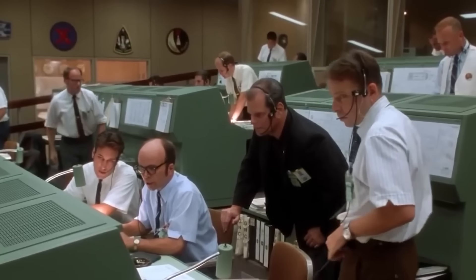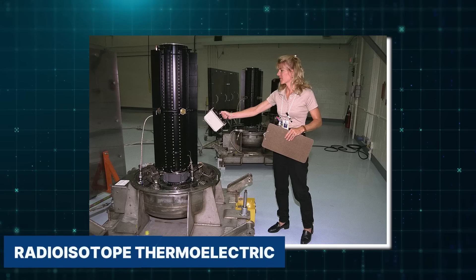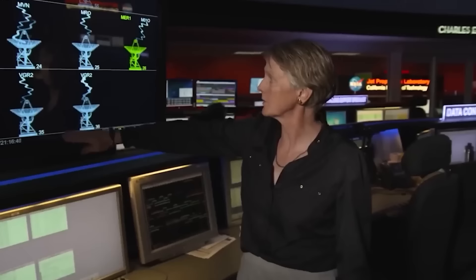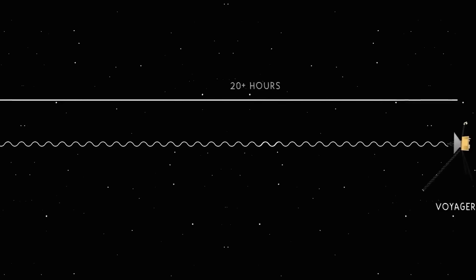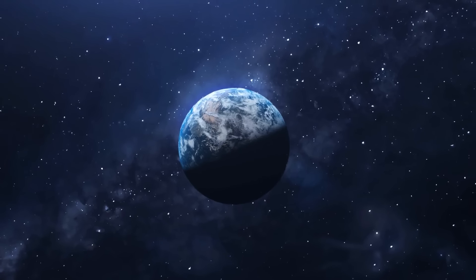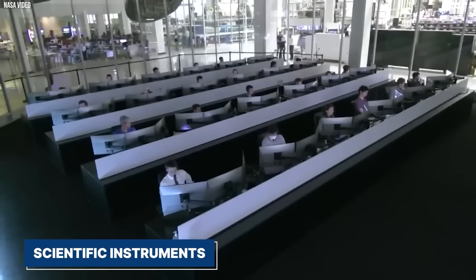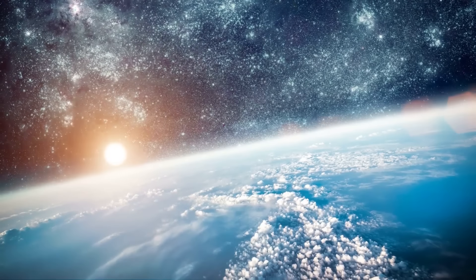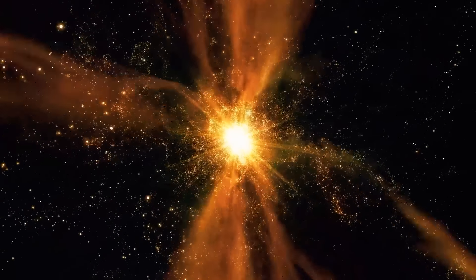Power: To power their instruments and communication systems, the Voyagers were equipped with long-lasting radioisotope thermoelectric generators, RTGs. These devices convert heat from radioactive decay into electricity. Communication: The spacecraft use high-gain antennas to send and receive signals over vast distances. These antennas are pointed towards Earth, allowing the Voyagers to communicate with mission control. Scientific Instruments: A suite of scientific instruments was included to study the planets, moons, and the space environment. These instruments measured various parameters, such as magnetic fields, plasma, and cosmic rays.